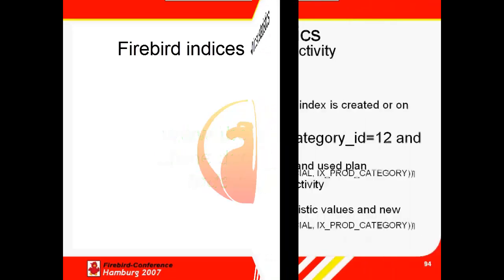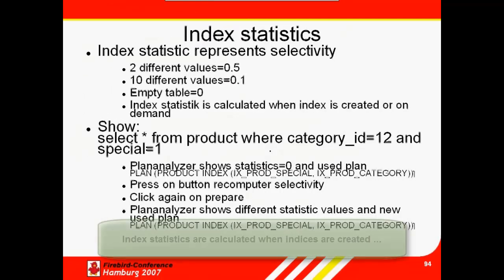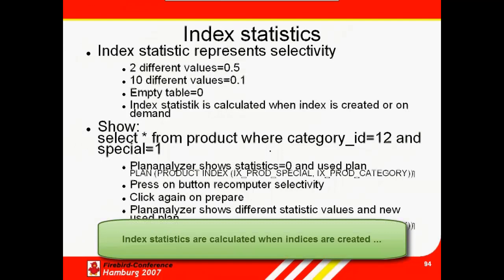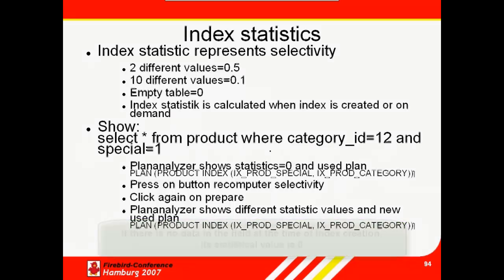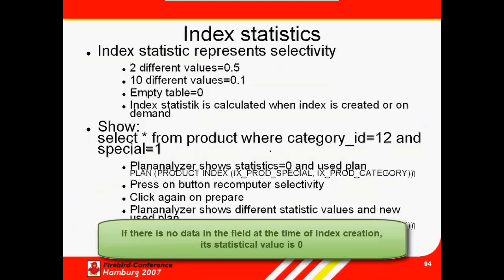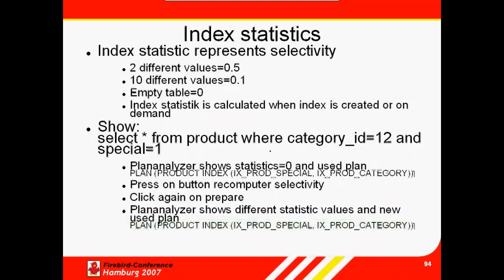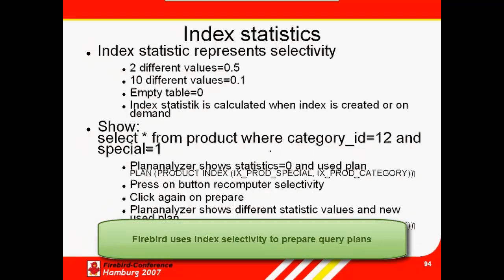The Firebird Optimizer and Index Statistics: all statistics are calculated when indices are created, based on any data already entered, and are only recalculated when a database is restored after backing up, or when this is explicitly requested by the developer. When an index is initially created with no data in the field, its statistical value is zero. The selectivity of the index is the best clue that the query plan has whether it should use the particular index or not. Every time you issue a piece of SQL — a select or an update against the server — the first thing it does is prepare how it's going to execute this.